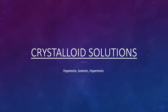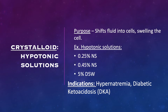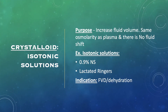Hypotonic solutions cause fluid to shift from within vessels into the intracellular spaces, causing cells to swell. Examples include 0.25 normal saline, 0.45 normal saline, and D5W, which is dextrose in water — dextrose being a form of glucose. Indications for hypotonic solutions include hypernatremia, which is too much sodium in the body and is likely accompanied by fluid volume deficit, as well as diabetic ketoacidosis.